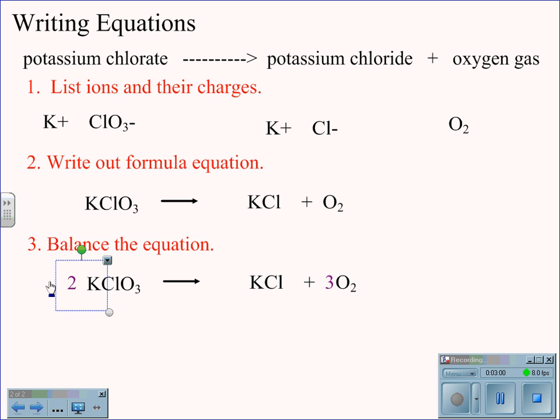This gives us six oxygen on both sides of the equation. By adding the two in front of the potassium chlorate, we now must add a two in front of the potassium chloride. Now the equation is balanced.